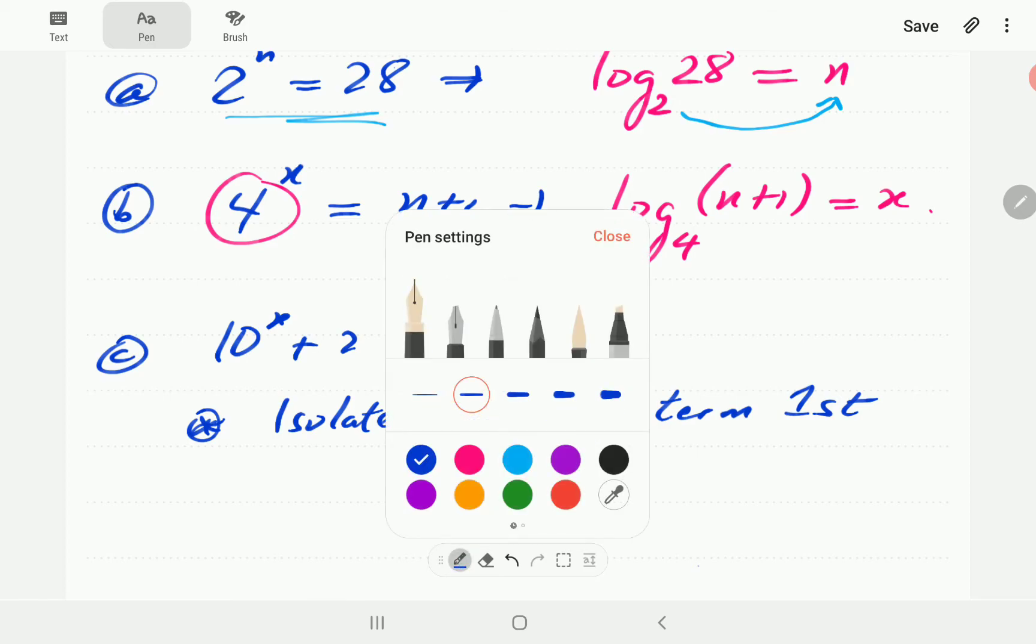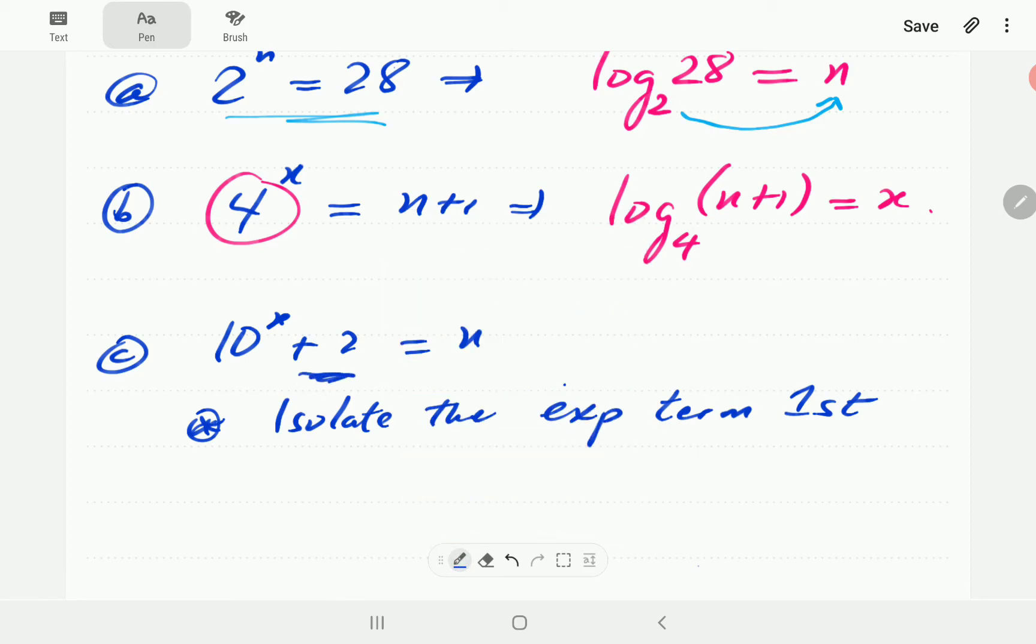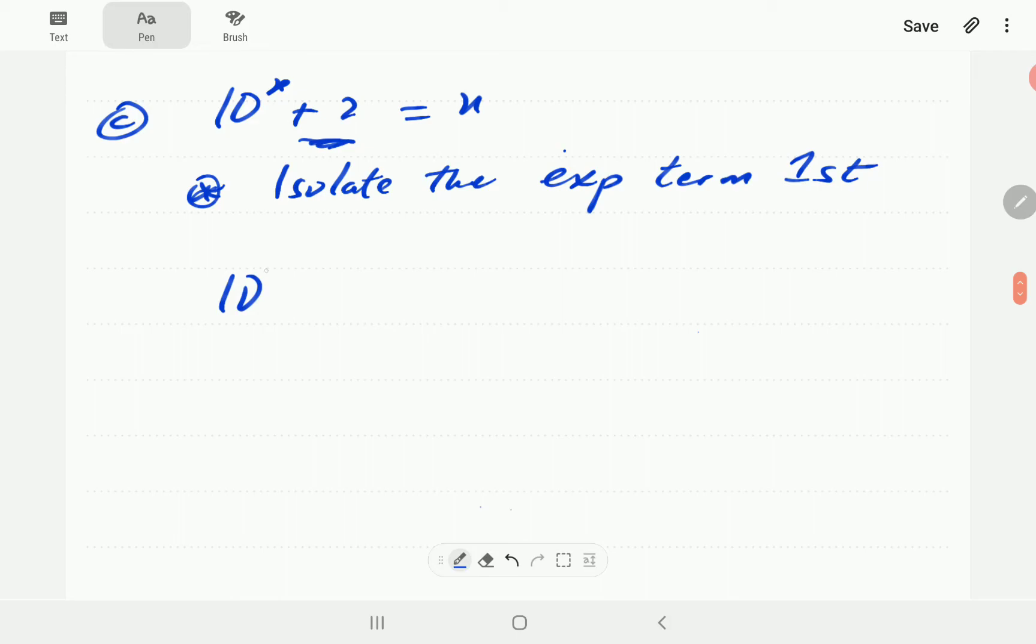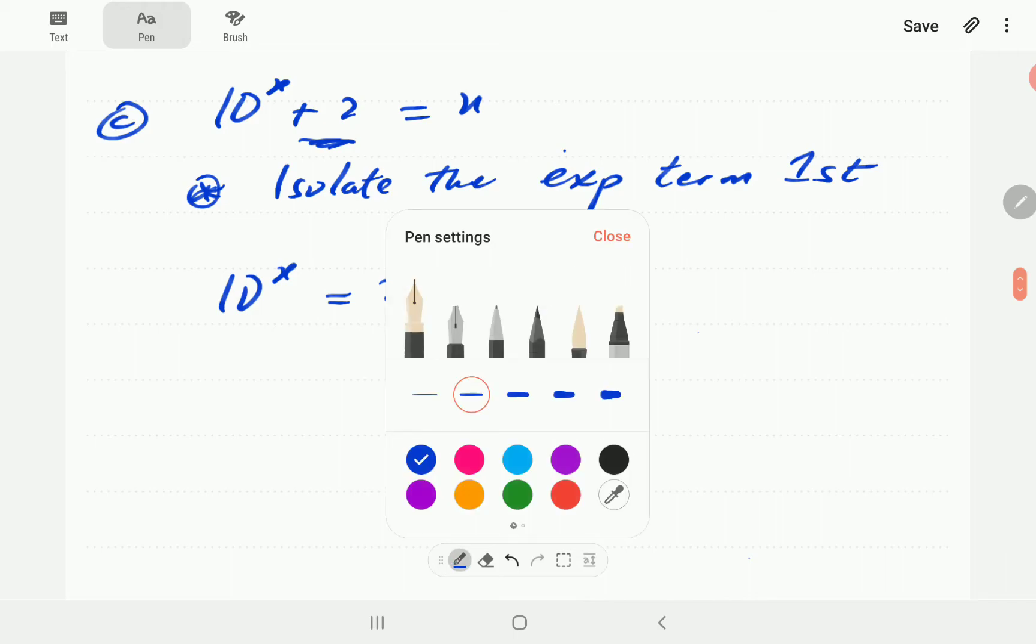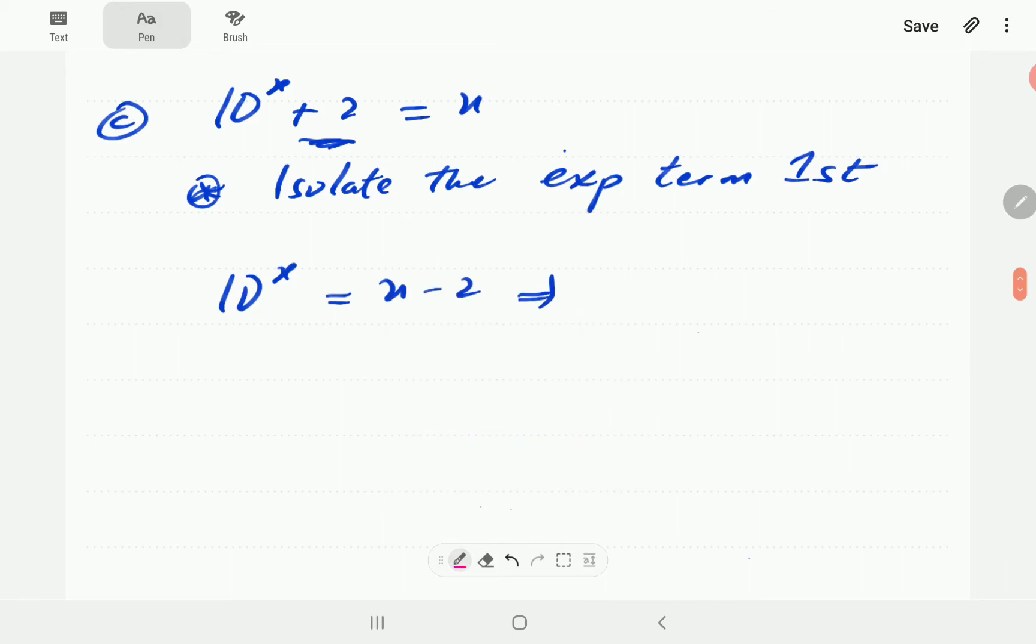So here we're going to have to move this term to the right-hand side. So we're going to have 10^x is n minus 2. Now we can convert to logarithmic form. We're going to have log equal to, the exponent is x, base is 10. So we've got log n minus 2 base 10 is equal to x.